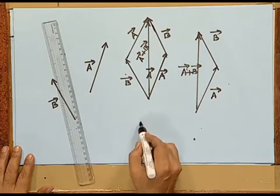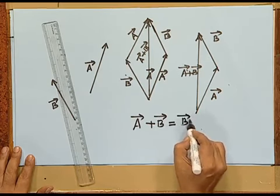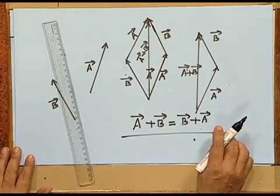In the parallelogram method, the two vectors should have a common point. Vector a and vector b are the two sides of the parallelogram. Complete the parallelogram — the diagonal passing through that common point is represented as a plus b, which is the same result as in the triangular method. This also shows that vector a plus b equals vector b plus a. So vector addition is commutative. If you want to call something a vector, the addition property — either by the method of triangulation or by the method of parallelogram — must be satisfied.